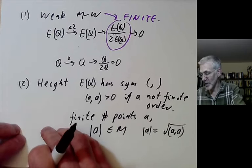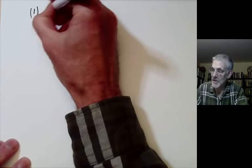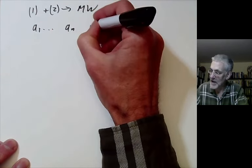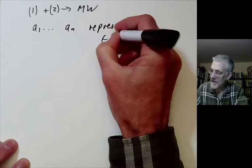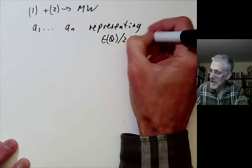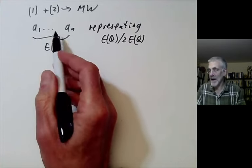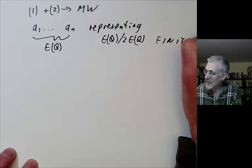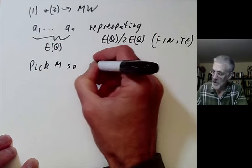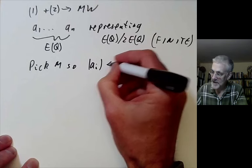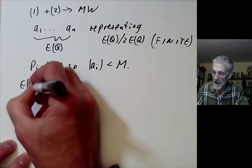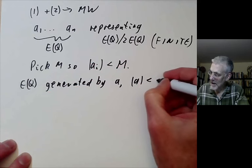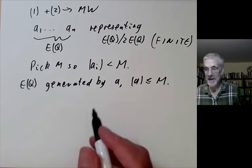The first thing to do is to check that properties 1 and 2 imply the full Mordell-Weil theorem. So we're going to show that properties 1 plus 2 implies Mordell-Weil. For this, what we do is we pick a set of points A1 to An representing all the points of E(Q) over 2E(Q). These points here are rational points on the elliptic curve. We pick enough of them so that every point here is represented by one of them, which we can do because this group is finite. And now we pick M so all these points Ai have length less than M.